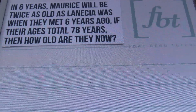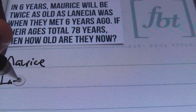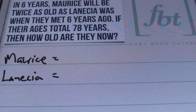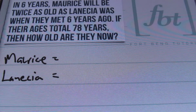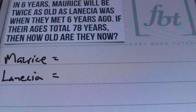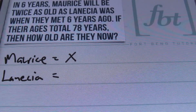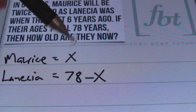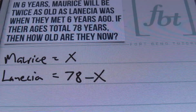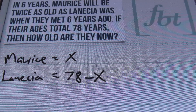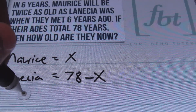Alright, so let's look at that. I have two people here — I have Maurice and I have LaNicia. Let's figure out which of these two people I don't have information on. I don't know Maurice's age, so that's going to be x. And LaNicia's age can be written as seventy-eight minus x, because their ages total seventy-eight years. So Maurice's age is x, and LaNicia's age is the difference of seventy-eight and x. In six years, Maurice's age will be x plus six.